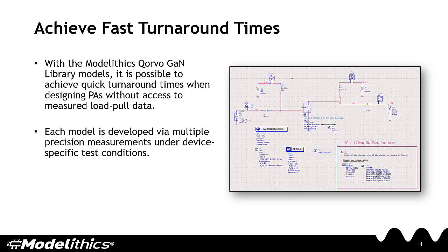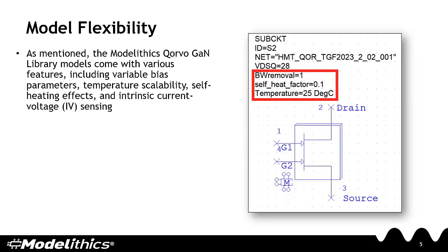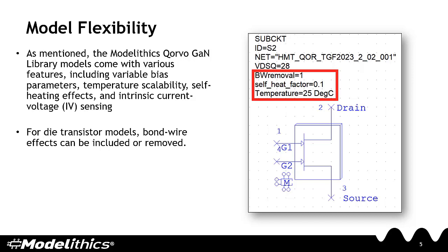Every model is developed by performing multiple precision measurements under device-specific test conditions. The models provide designers with a great deal of flexibility. Features include variable bias parameters, temperature scalability, self-heating effects, intrinsic IV sensing, and — for die models — bond wire effects are also accounted for.